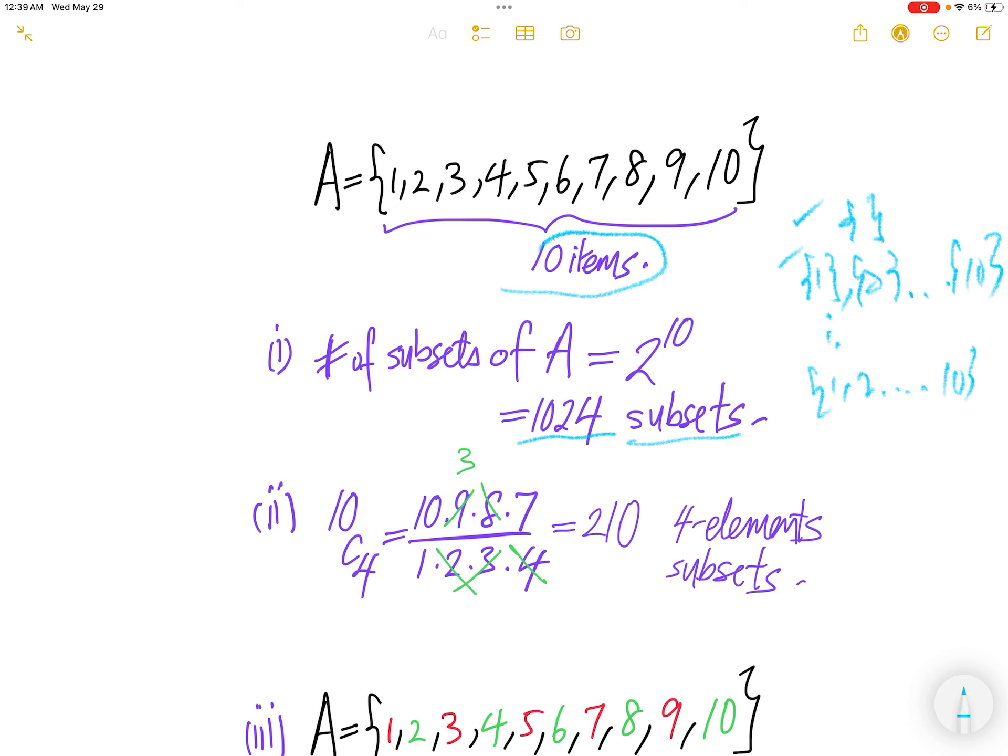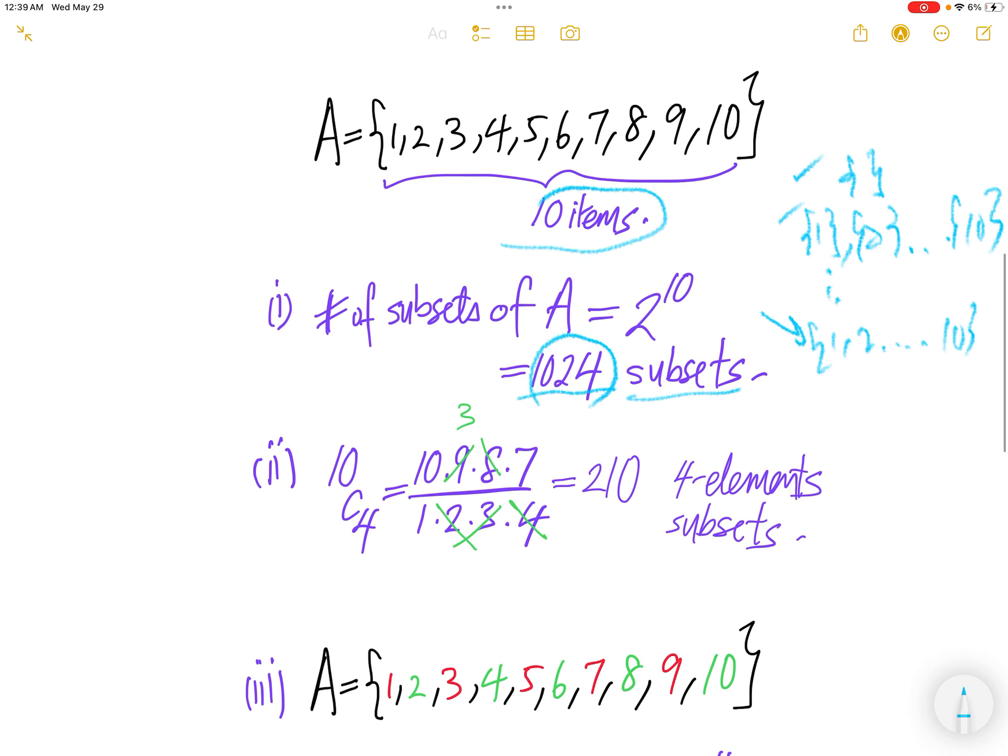Okay, so we count them 1, 2, 3, 4, 5, blah, blah, blah, until the last one is 1024 subset. So that's the idea.